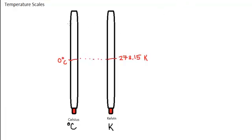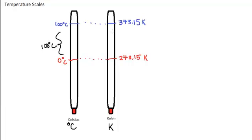Water boils at 100 degrees Celsius. On the Kelvin temperature scale, that occurs at 373.15 Kelvin. You'll notice there are 100 degrees difference on both the Celsius temperature scale and the Kelvin temperature scale, so 100 Kelvin is equal to 100 degrees Celsius in terms of the temperature change.